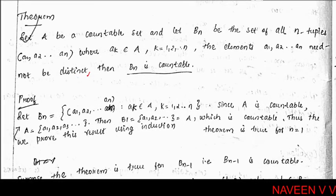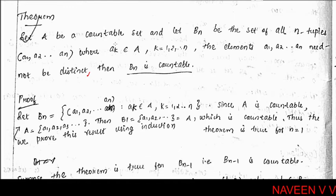Next theorem. Let A be a countable set and let Bₙ be the set of all n-tuples (a₁, a₂, ..., aₙ) where aₖ belongs to A, k equal to 1, 2, 3 up to n. The elements a₁, a₂, ..., aₙ need not be distinct. Then Bₙ is countable.